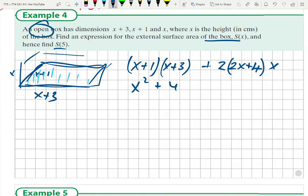And we have 4x squared just coming up here, and 2 and 4 and x is giving us 8x.